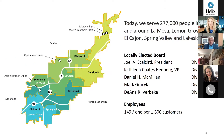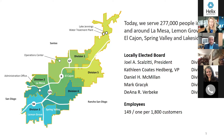Today we serve about 277,000 people in La Mesa, Lemon Grove, El Cajon, Spring Valley, Lakeside, and unincorporated areas of the county. Our service area covers 50 square miles. You are represented by a locally elected board of five board members who serve four-year terms. We have 149 employees — about one employee per 1,800 customers — and we've been at that level for the past six years.